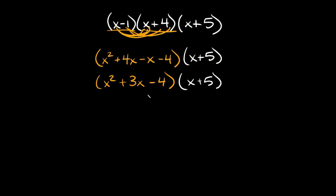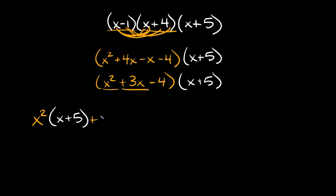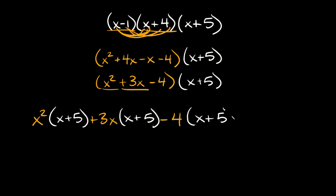So now we have the trinomial (x squared plus 3x minus 4) times the binomial (x plus 5) — this looks familiar, it's a trinomial times a binomial just like before. I'll break out each term and multiply by the binomial: x squared times (x plus 5), then positive 3x times (x plus 5), and then minus 4 times (x plus 5).